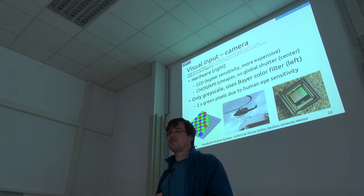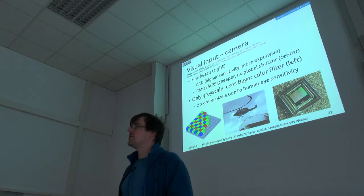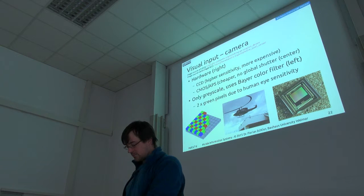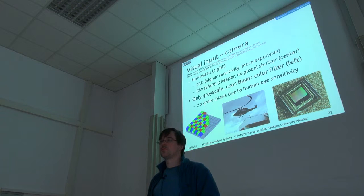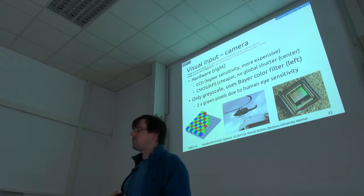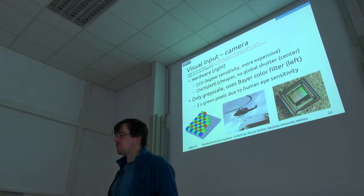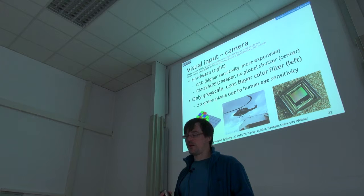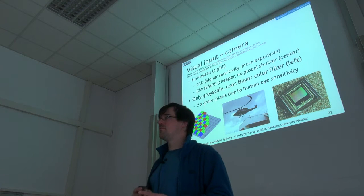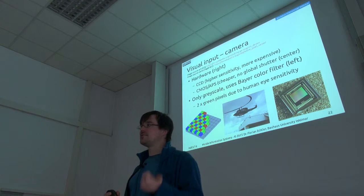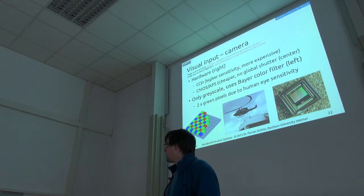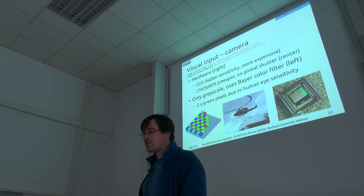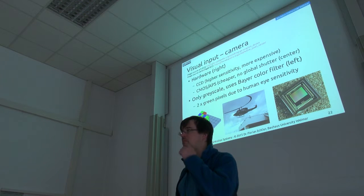That was just a brief detour into InfoVis. Now I'd like to talk a bit about visual input — how can I get data into the mobile device by using vision in the widest sense? For that, usually I need a camera. There are two different major classes of camera available: CCD cameras and CMOS cameras. Most mobile devices use CMOS cameras because they're simply cheaper and more or less sufficient for most mobile applications.